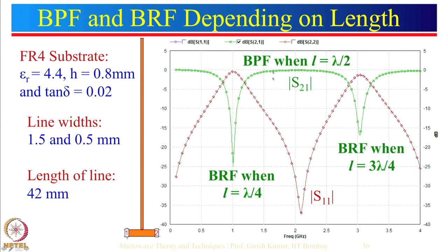Looking at the S21 response: when the length becomes lambda-by-4 and the end is open circuit, the open acts as a short circuit, so nothing passes from port 1 to port 2 — S21 is around minus 25 dB. At double the frequency, around 2 GHz, the length becomes lambda-by-2, so the open acts like open, and whatever is at the input goes to the output — this is a band pass response. At triple the frequency, around 3 GHz, the length becomes 3 lambda-by-4 and the response becomes that of a band reject filter.